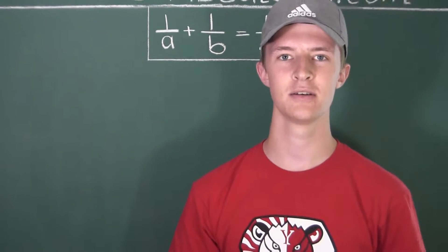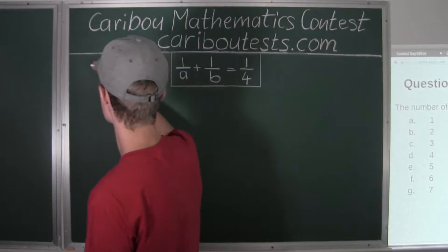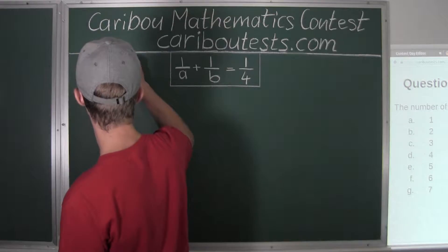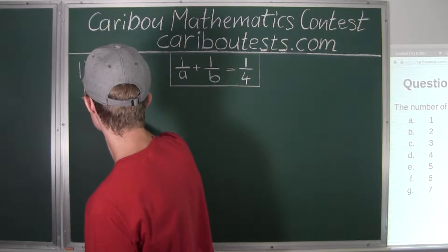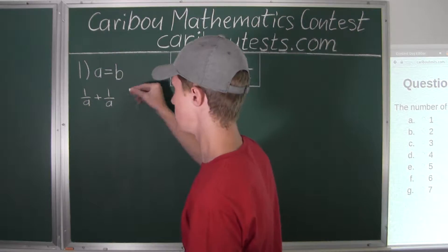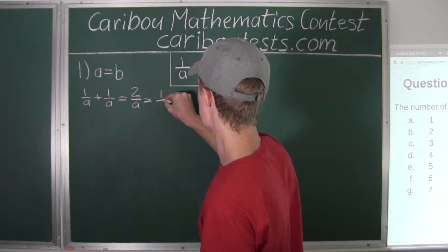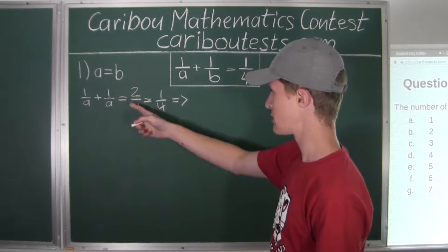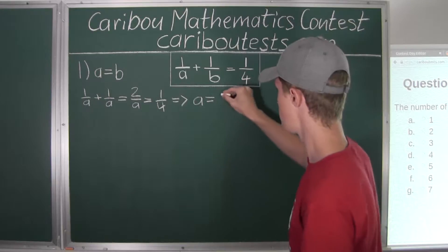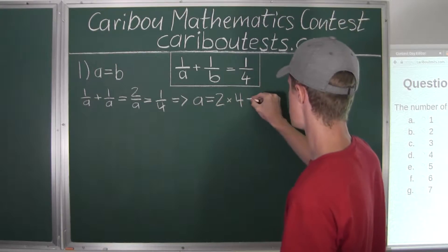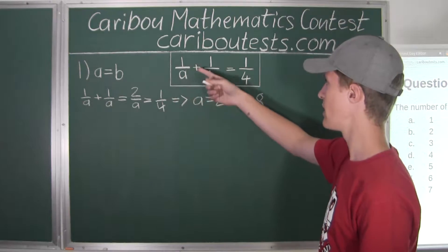Let's consider two cases for this question. The first case is that a is equal to b. If we know that a equals b, we can rewrite this as 1/a + 1/a, which is 2/a, equal to 1/4. Cross-multiplying gives a = 2 × 4 = 8. So a = 8 and b = 8. We can verify: 1/8 + 1/8 = 1/4.